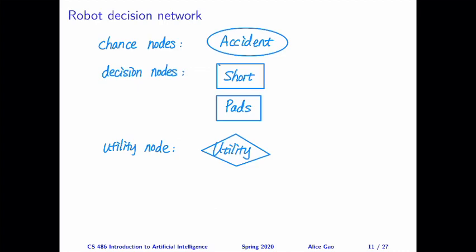Let me stop the video here. In the next video, we are going to look at the relationships between these nodes and start adding edges to our decision network. After watching this video, you should be able to describe the three types of nodes in the decision network and how we can draw them.